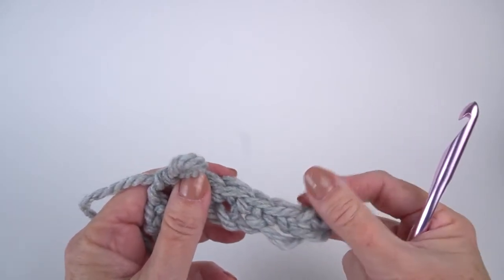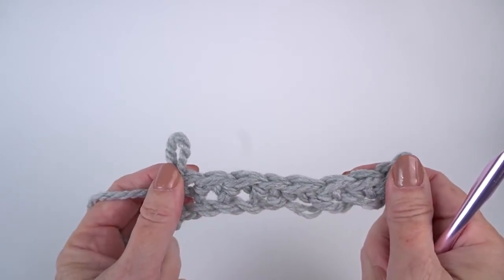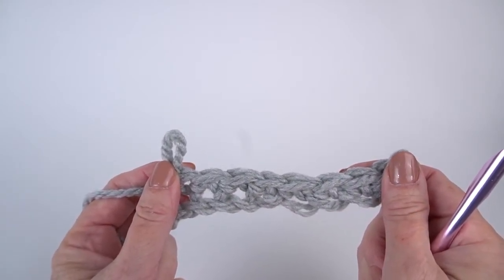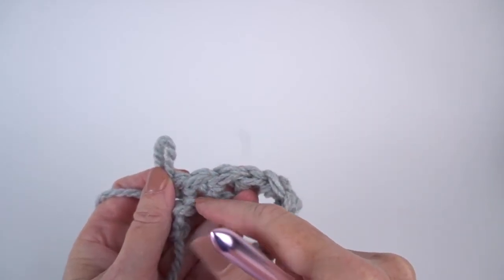So whether you want to go in the front under two legs or the front under one leg, it really is going to depend on what's going to happen to this piece when you're done with it. For a lacier piece, I would definitely go under one leg.